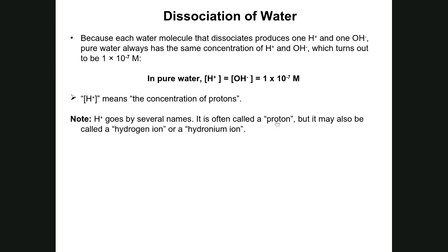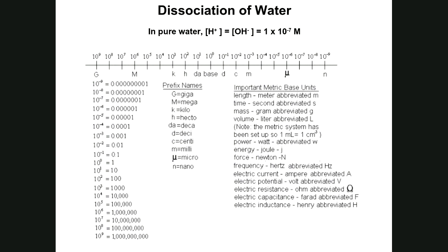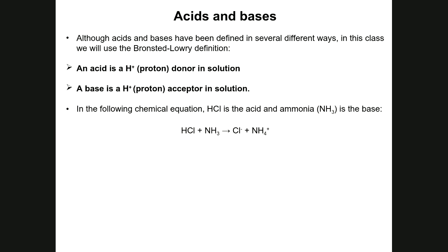Using the metric system, 1×10⁻⁷ molar equals 0.0000001 — less than a micromolar, so it's not a high number of protons. Scientists didn't want to say 'pure water has a proton concentration of 1×10⁻⁷,' so they developed a way to convert that value. Before getting to that conversion, let's briefly talk about acids and bases.